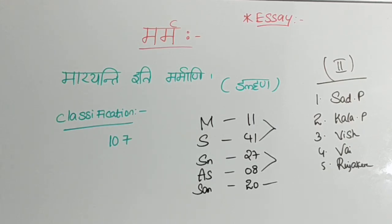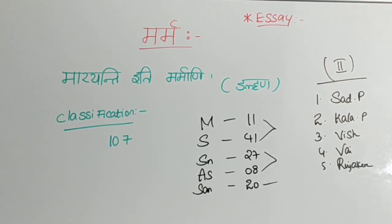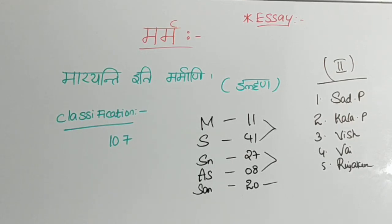This is the most important thing regarding these classifications. For Sadya Pranahara Marma, the Panchamahabhuta constitution is Agneya. For Kalanthara Pranahara Marma, it is Saumya and Agneya. For Vishalyagna Marma, it is Vayu Mahabhuta. For Vaikalyakara Marma, it is Jala Mahabhuta. For Rujakara Marma, it is Agneya and Vayu Mahabhuta. To summarize the order: first Agneya, then Agneya and Saumya, third Vayu, fourth Jala, fifth Agneya and Vayu.